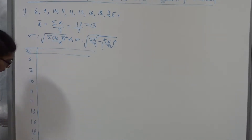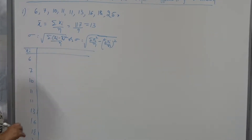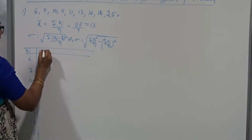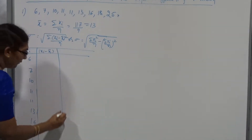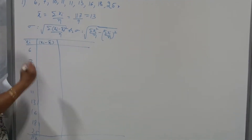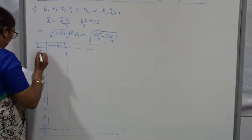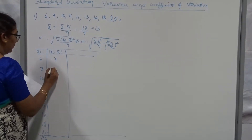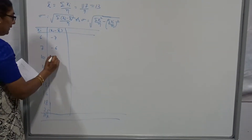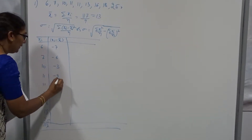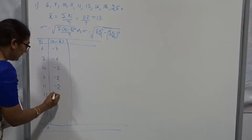Next, find the difference xi minus x-bar. You have to give me the difference of xi minus x-bar. I am going to write everything on the board and explain in detail. Xi minus x-bar: 6 minus 13 is minus 7. 7 minus 13 is minus 6. 10 minus 13 is minus 3. 11 minus 13 is minus 2. Again 11 minus 13 is minus 2. 13 minus 13 is 0.